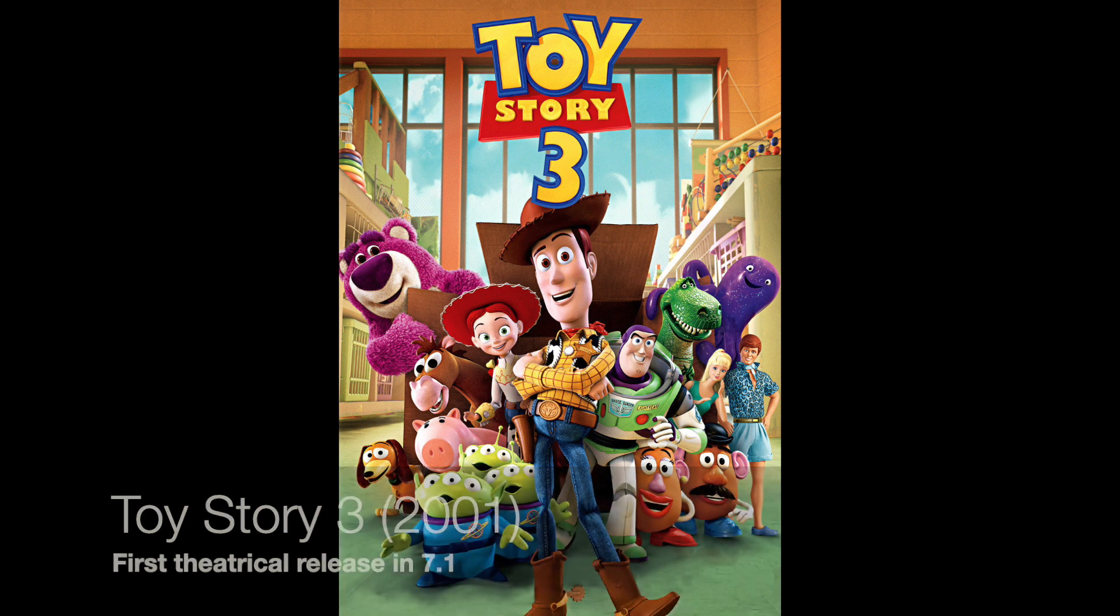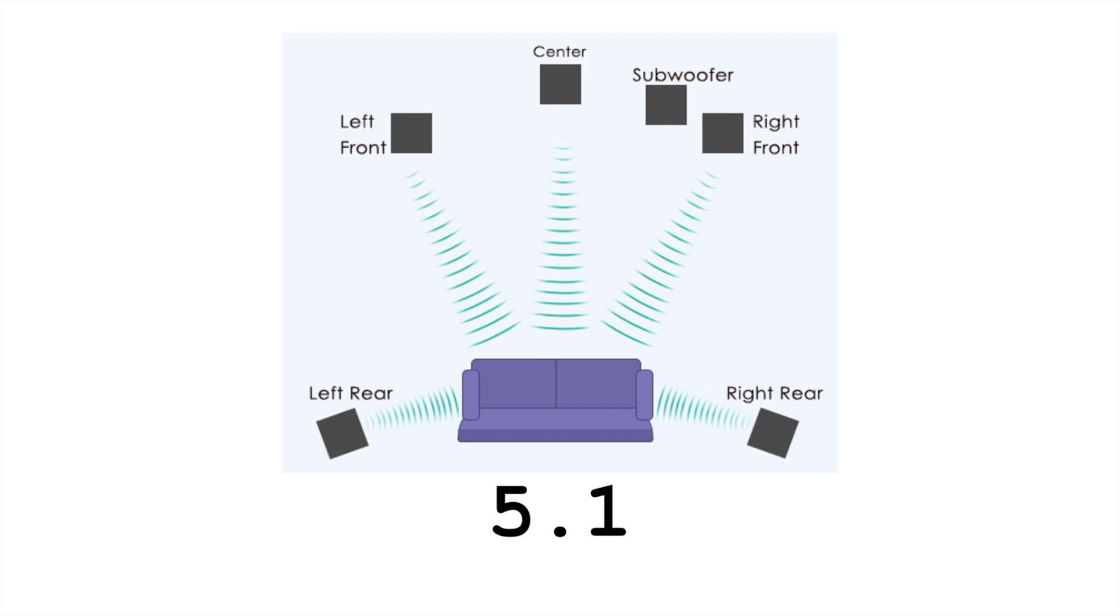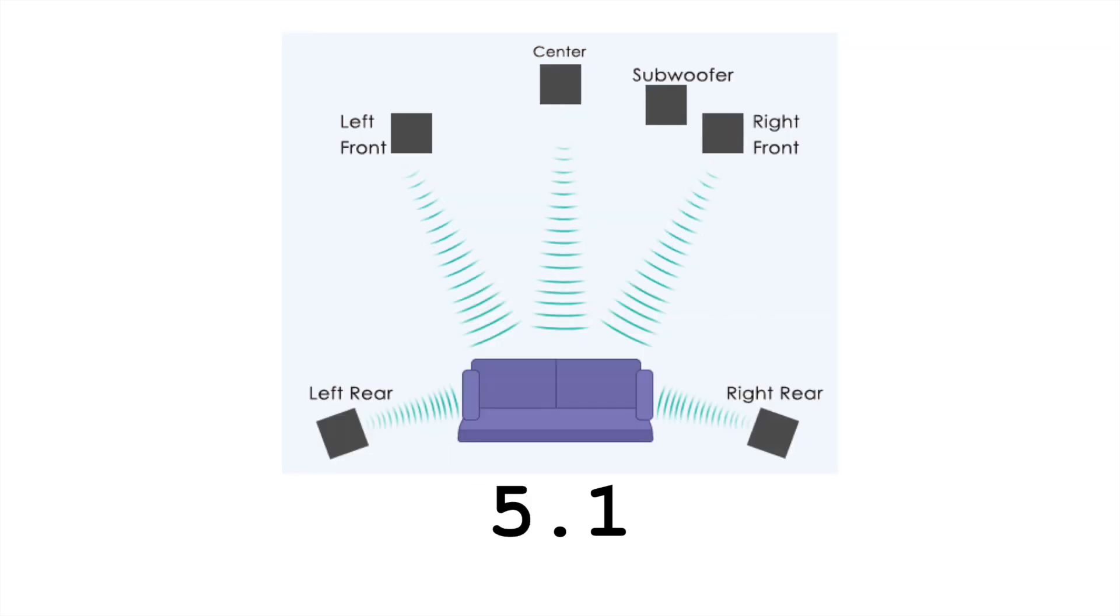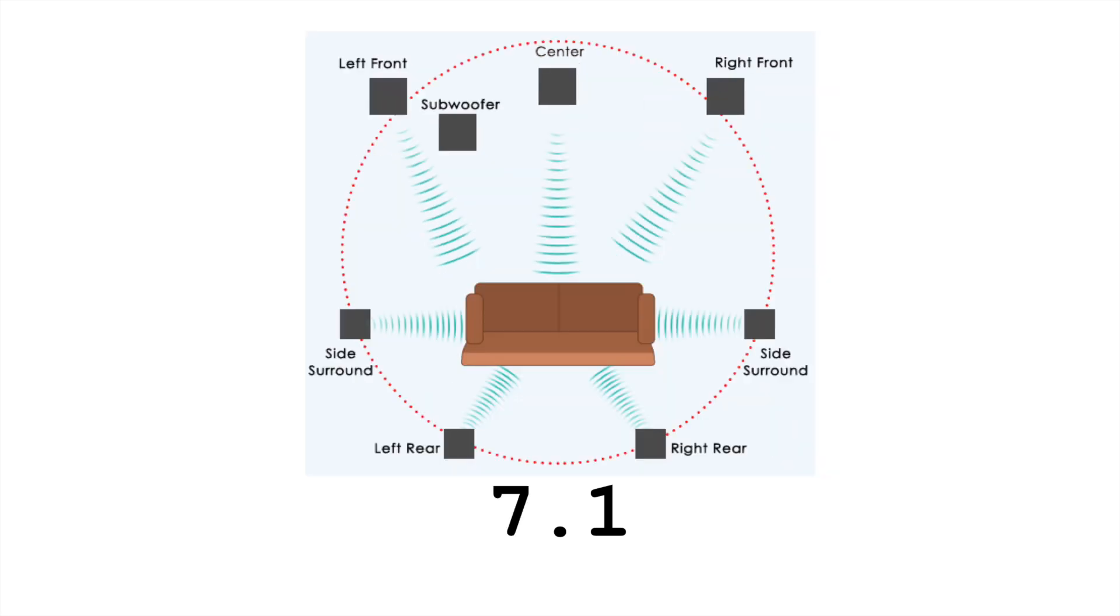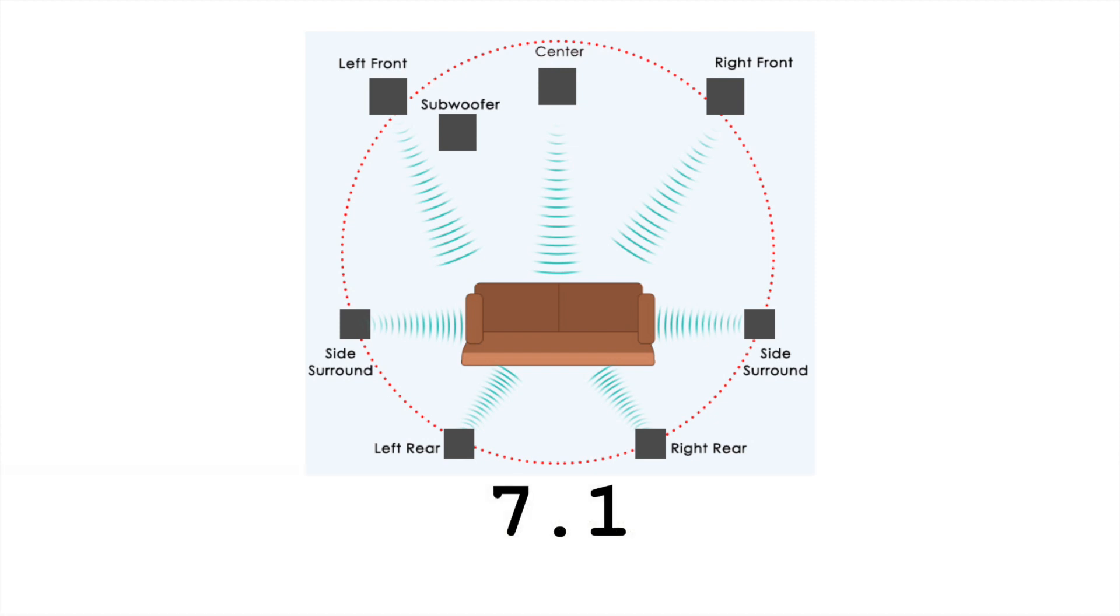And of course these formats also became available on home systems, especially with the advent of DVDs in the late 90s and early 2000s. The numbers here in 5.1 and 7.1 are the number of channels. Five or seven channels of audio plus one channel for the subwoofer. Since low frequency information doesn't spatialize as well, we can send all of our low frequencies to the same place. And so these systems provide 360 degrees of audio around the listener.